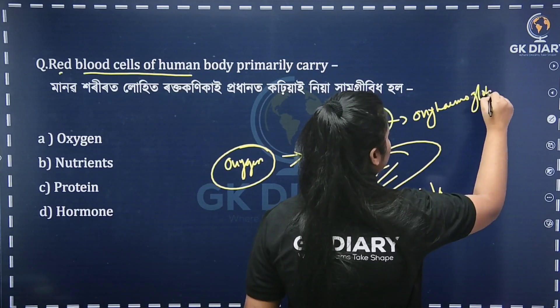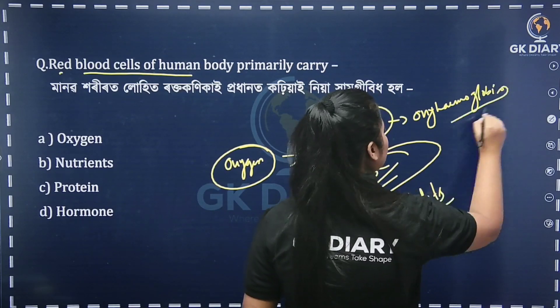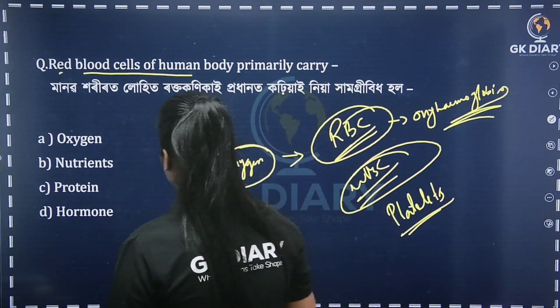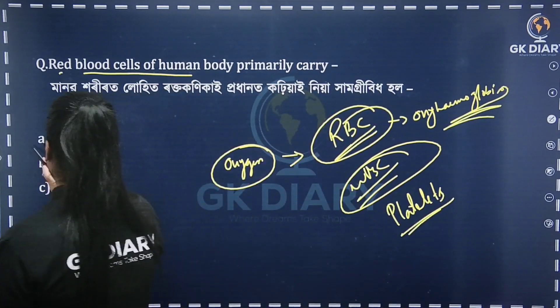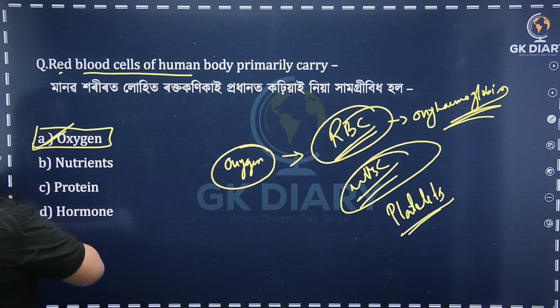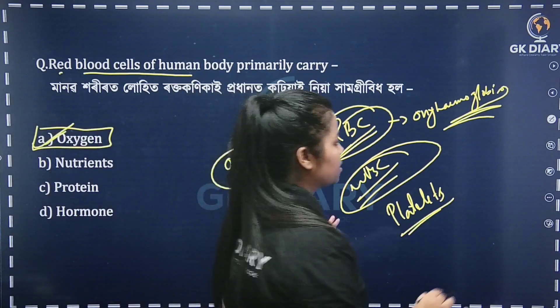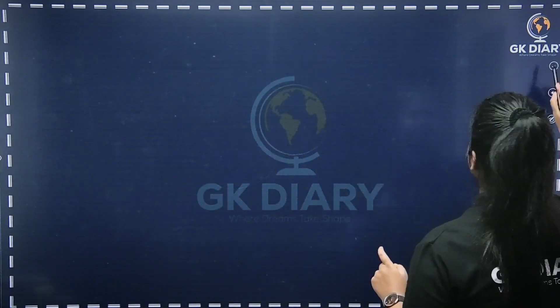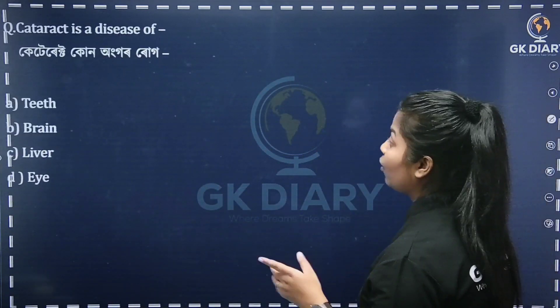So what is the correct option? Oxyhemoglobin — oxygen. Option A is the correct answer. Option A is the correct answer. Next question.